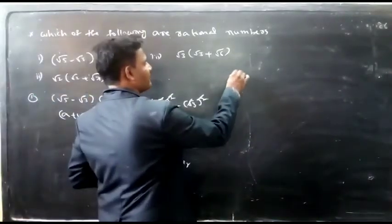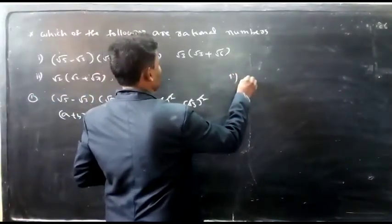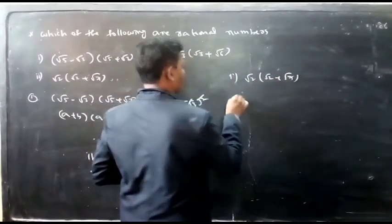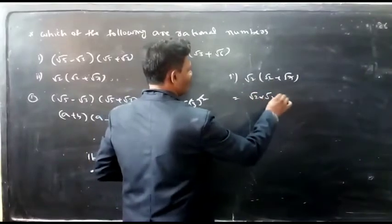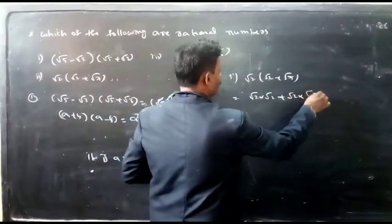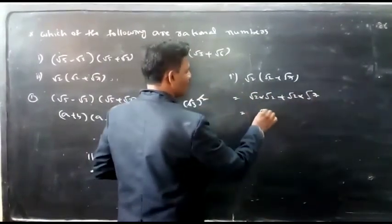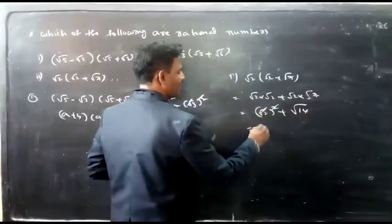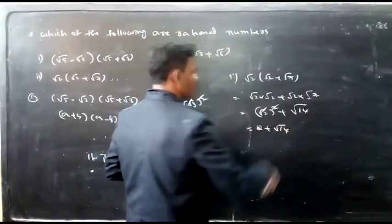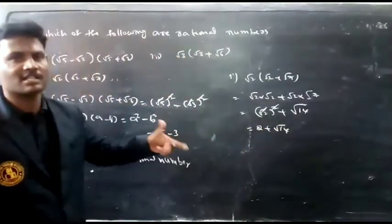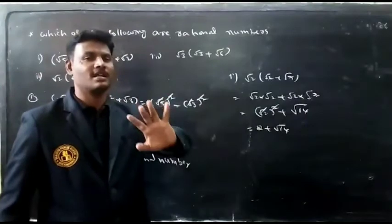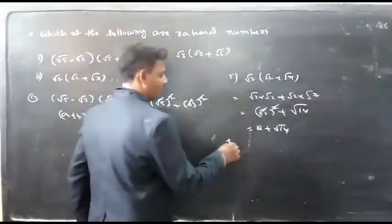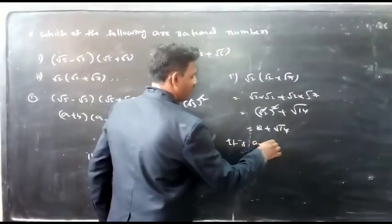The second question: √2(√2 + √7). Multiply: √2 × √2 + √2 × √7 = (√2)² + √14 = 2 + √14. Since √14 is irrational, the sum of a rational number and an irrational number is always irrational. So it is an irrational number.